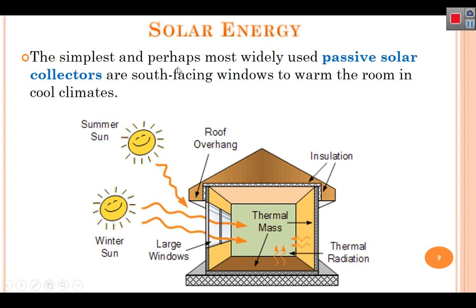The simplest and perhaps most widely used is passive solar collector, which allows light to get into a house and warm it in cold climates. This house has large windows — in summer, light cannot easily enter the house, but in winter light enters easily, thermal energy is produced to warm the house, and less electricity is used.